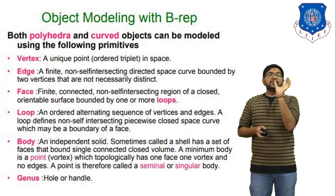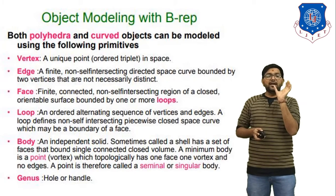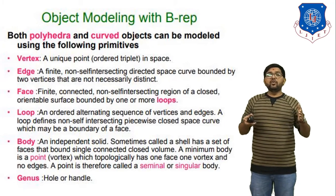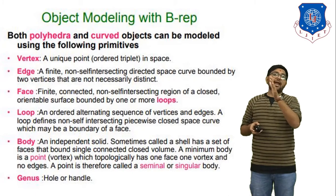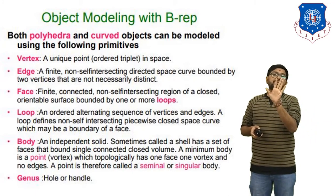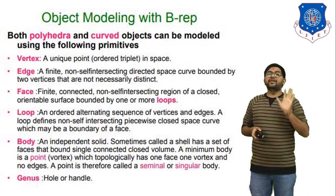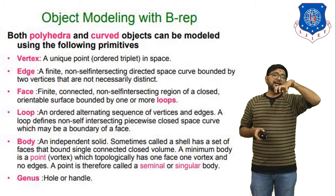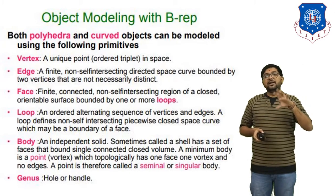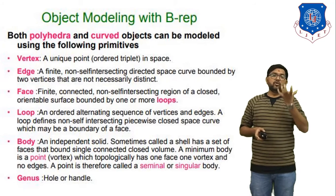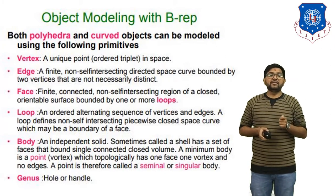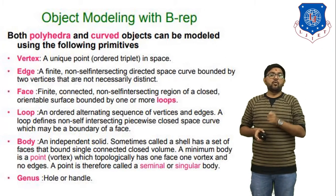Next is the face. A cube has a total of six faces. A face is a finite connected non-intersecting region of a closed orientable surface bounded by one or more loops. If you combine a number of edges — specifically four edges — you generate one face. Next is the loop. If you generate a hole in a cube, that hole is considered a loop. The top circle and bottom circle of that hole are both considered loops. A loop is an ordered alternating sequence of vertices and edges, defining a non-self-intersecting piecewise closed space curve which may bound a face.